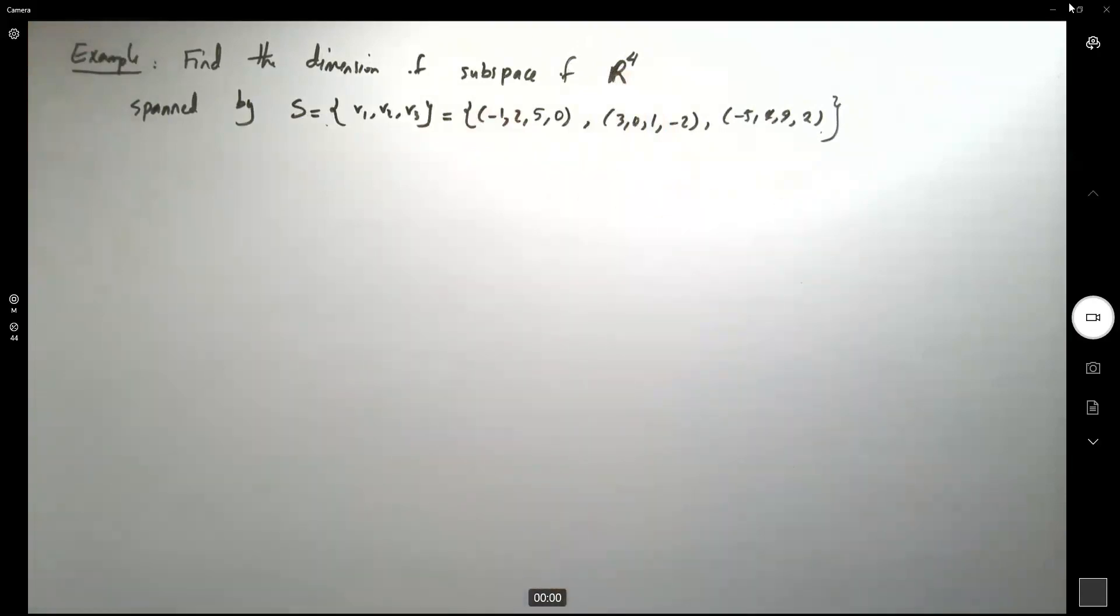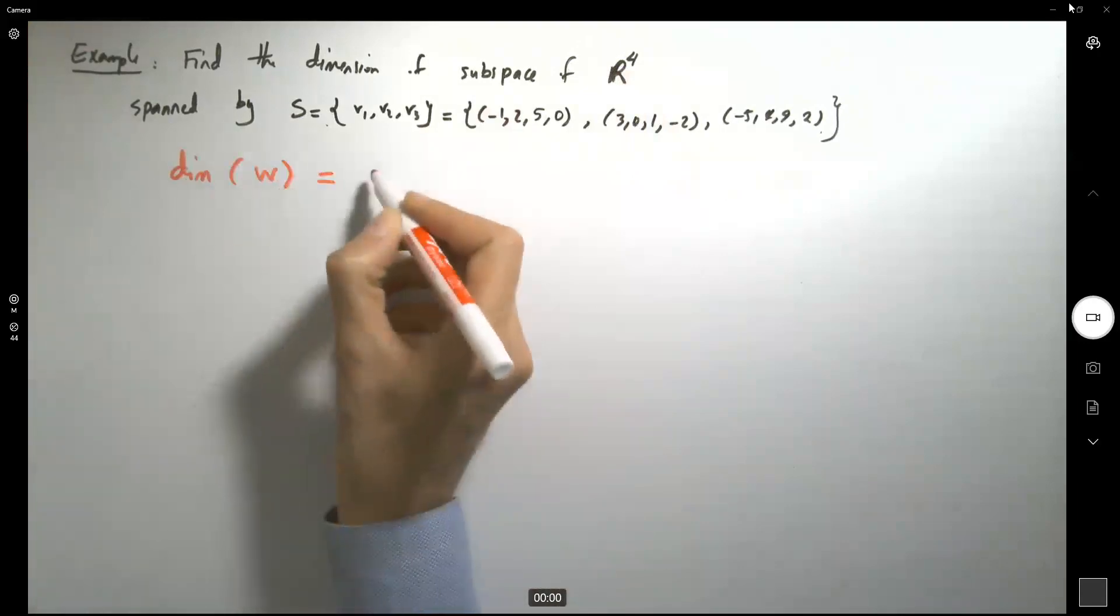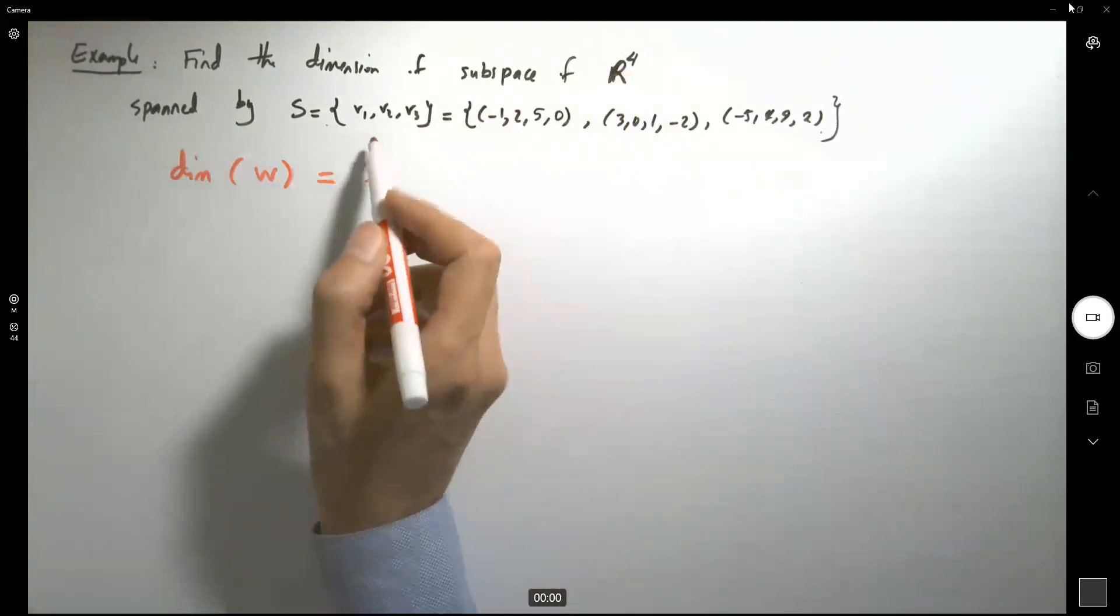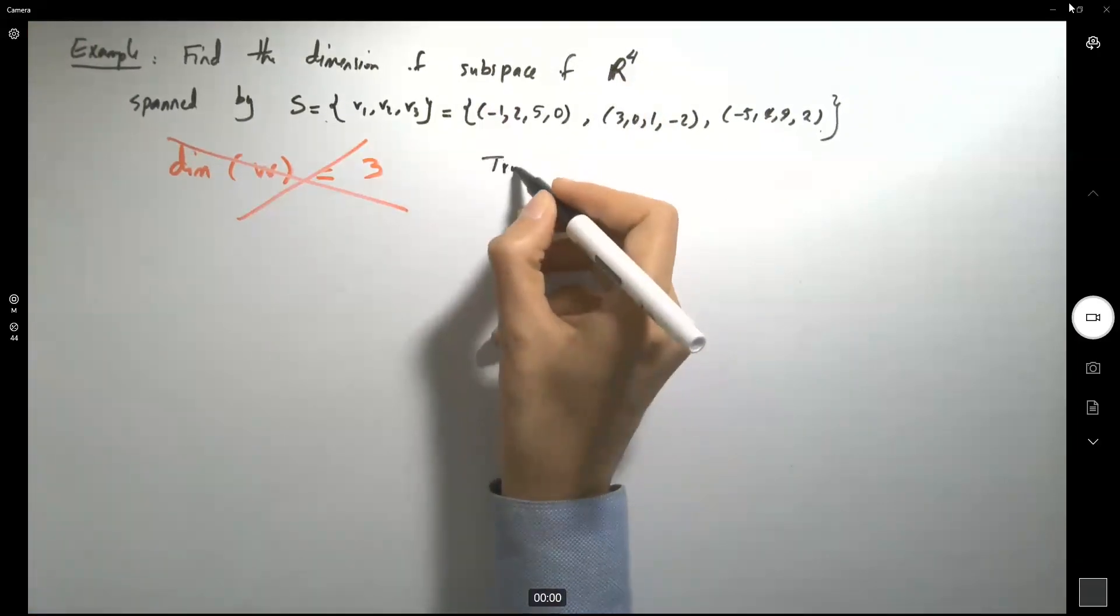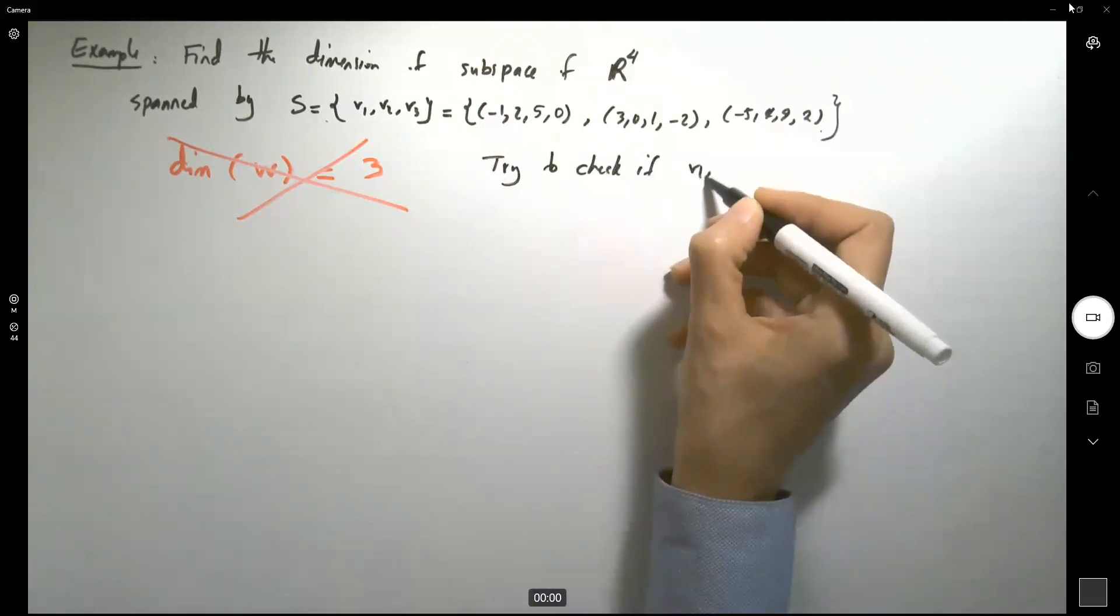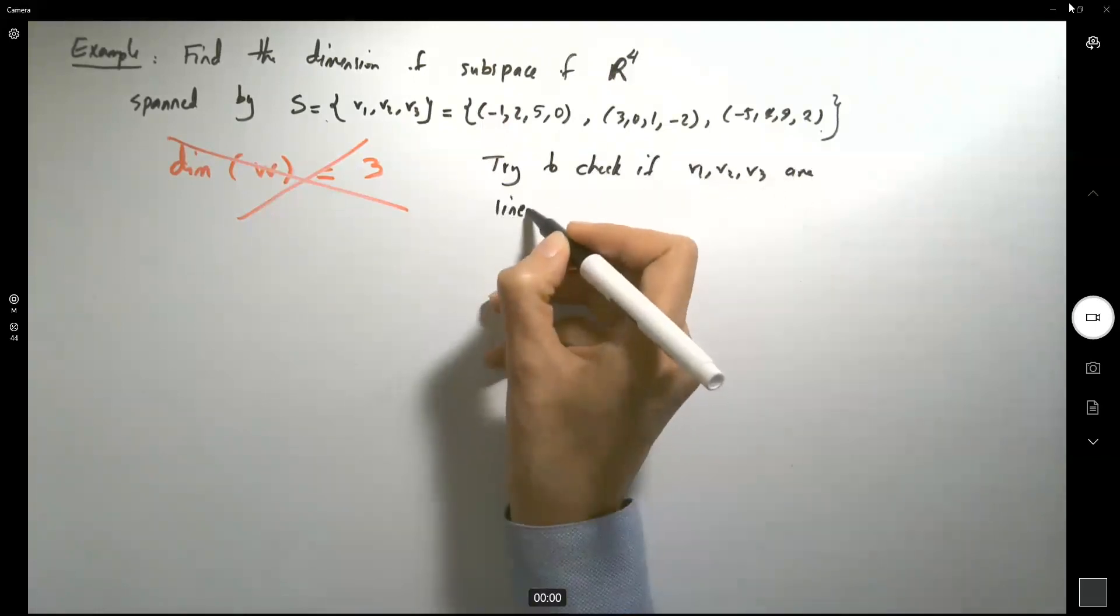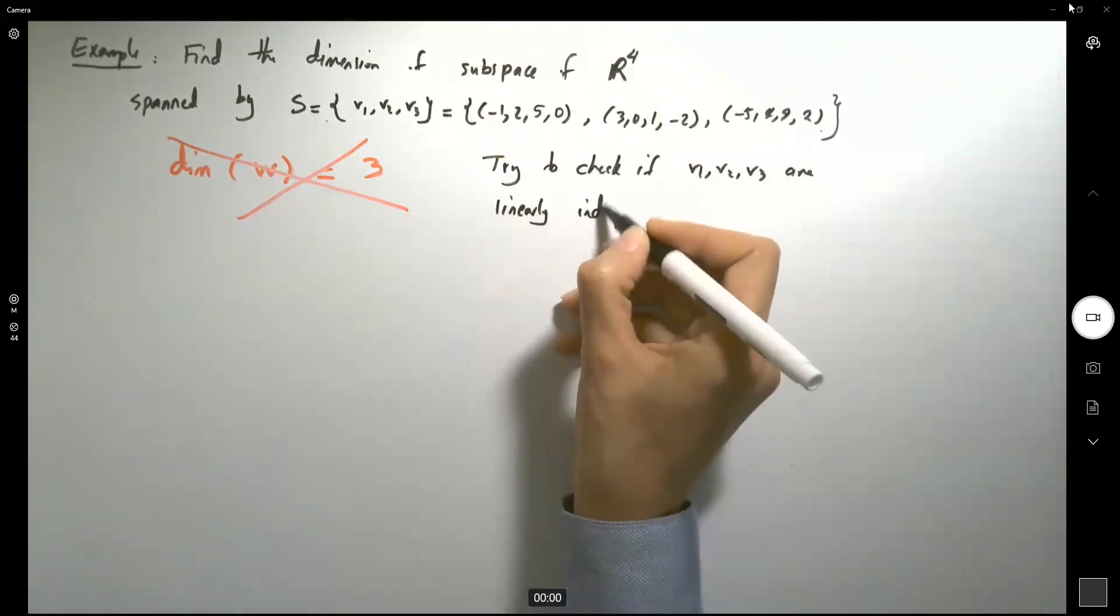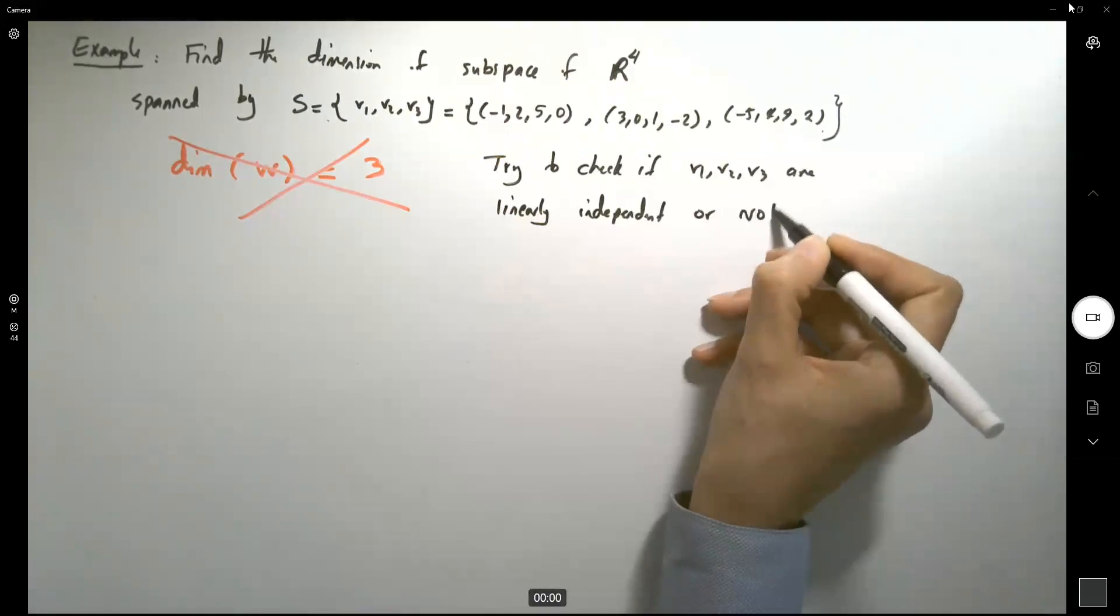So are we going to just quickly say that the dimension of that subspace is 3? We need to investigate first. Try to check if v1, v2, and v3 are linearly independent or not.